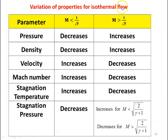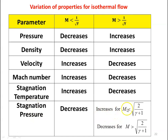For the entire property variation in isothermal flow — pressure, density, velocity, Mach number, stagnation temperature, stagnation pressure — the limiting value is M = 1/√γ. When M < 1/√γ: pressure decreases, density decreases, velocity increases, Mach number increases, stagnation temperature increases, stagnation pressure decreases. When M > 1/√γ: pressure increases, density increases, velocity decreases, Mach number decreases, stagnation temperature decreases, and stagnation pressure increases for M < √(2/(γ+1)) and decreases for M > √(2/(γ+1)).